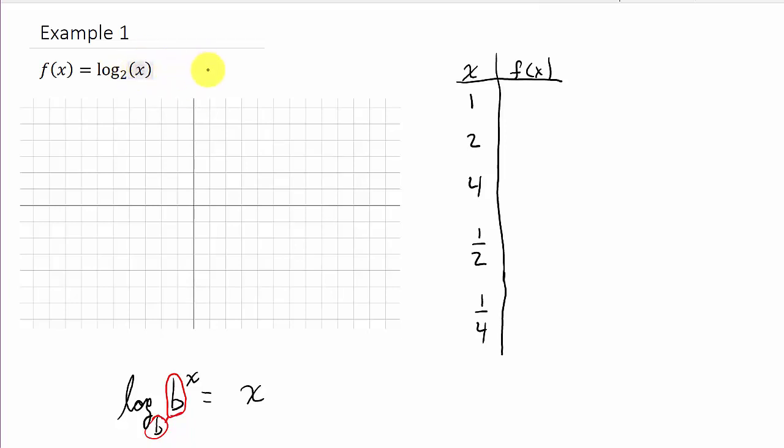If I plug 4 in for x, well, 4 and 2 are not the same. But 4 can be written as 2 squared. You see that? And the same thing with 1 half. Can I rewrite 1 half as 2 raised to a power? Yeah. 1 half is what? 2 to the negative 1. See, if you move the 2 up.